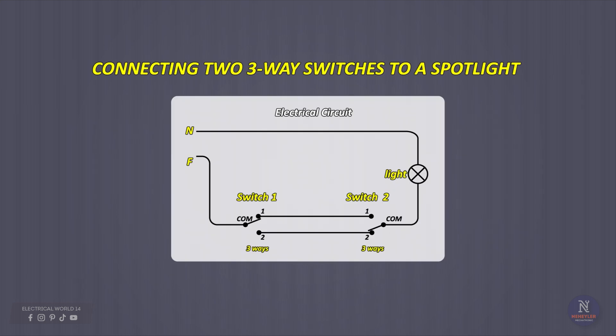In this video I will explain in a simple way how you can connect a switch to turn on or off a light from two different positions. To turn on or off a light from two different positions you can do it using three-way switches, also known as staircase switches.